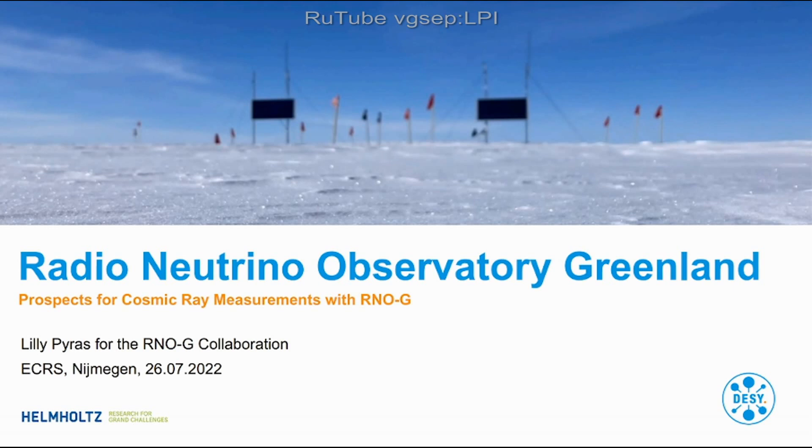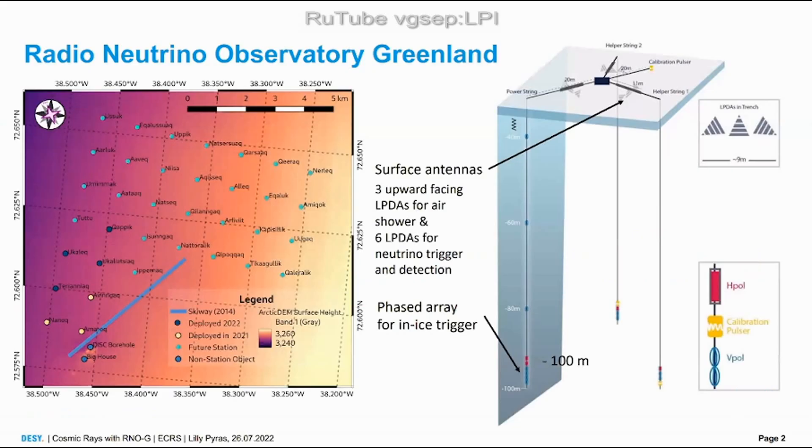RNO-G is located on the top of the Greenlandic ice sheet on three and a half kilometer height. Here is the array we have planned so far, it consists of 35 stations.